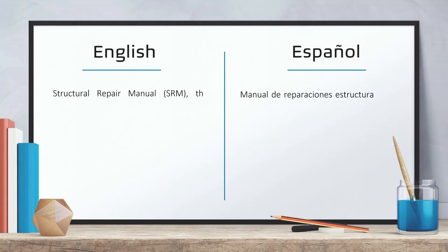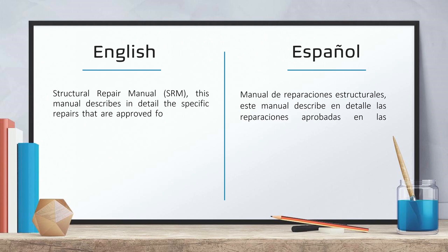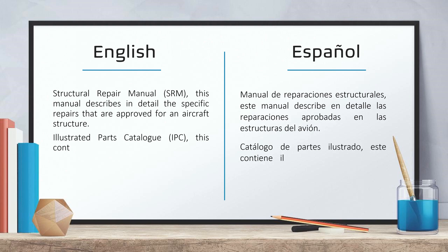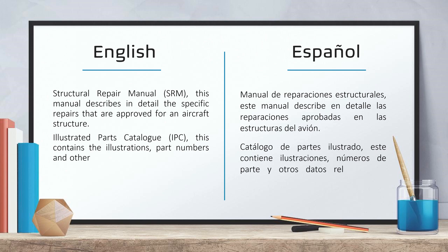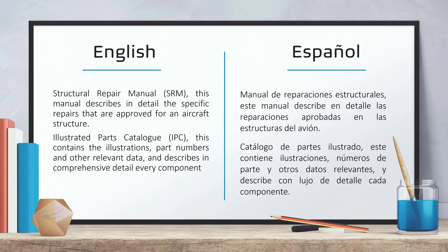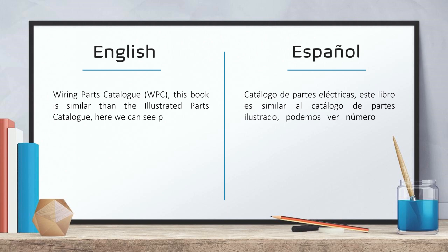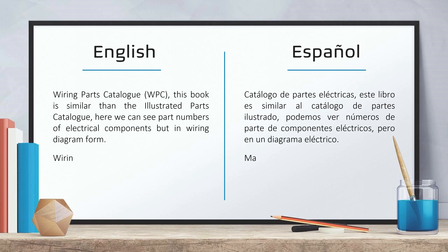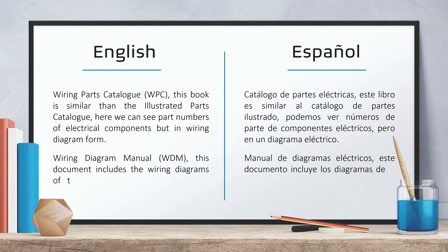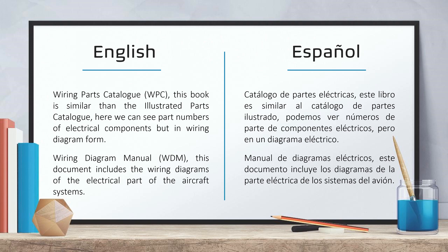Structure and repair manual — this manual describes in detail the specific repairs that are approved for an aircraft's structure. Illustrated parts catalog — this contains the illustrations, part numbers and other relevant data and describes in comprehensive detail every component. Wiring parts catalog — this book is similar to the illustrated parts catalog. Here we can see part numbers of electrical components both in wiring diagram form. Wiring diagram manual — this document includes the wiring diagrams of the electrical parts of the aircraft systems.